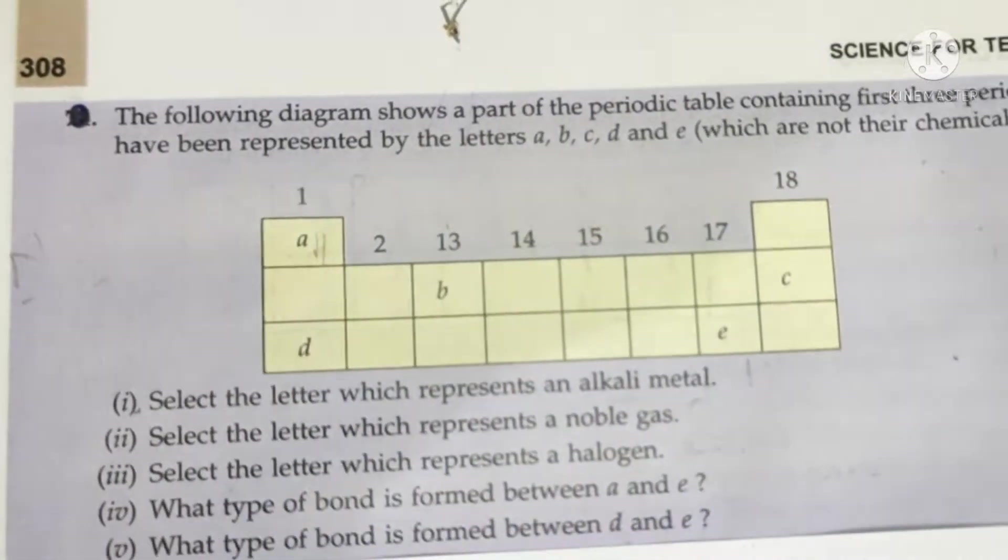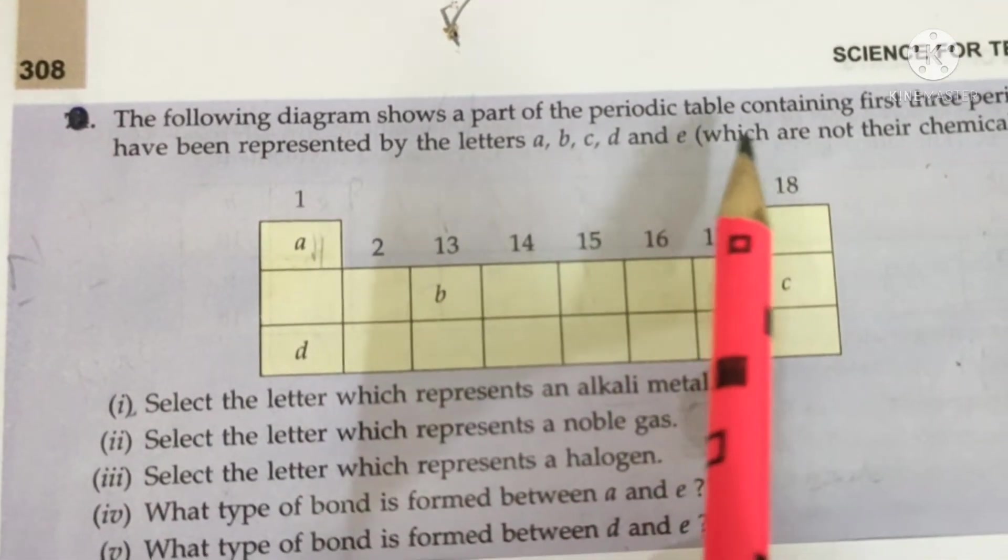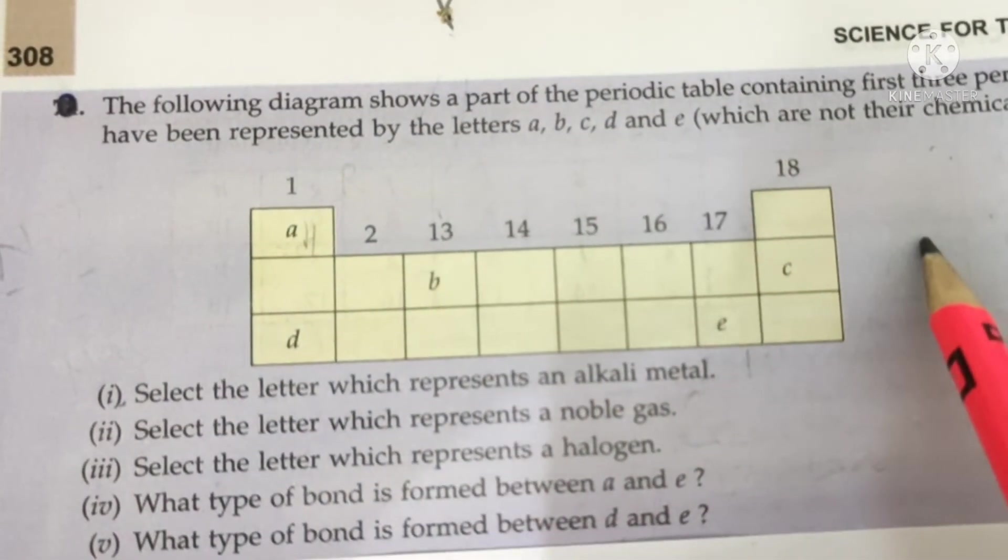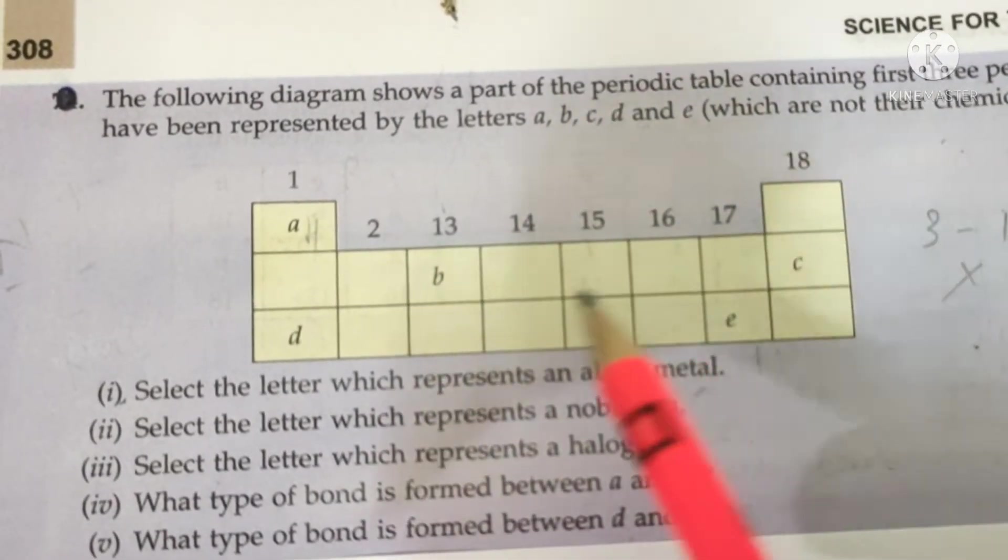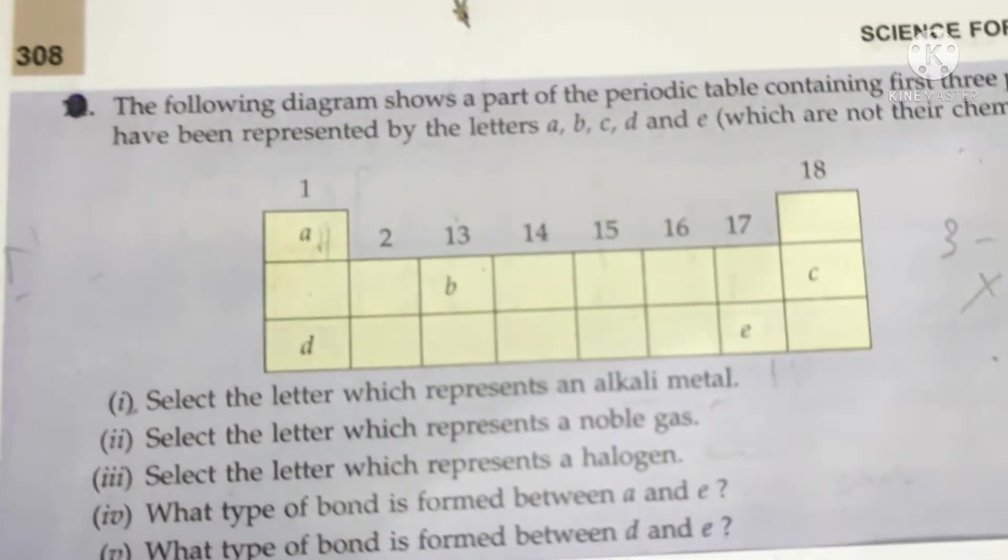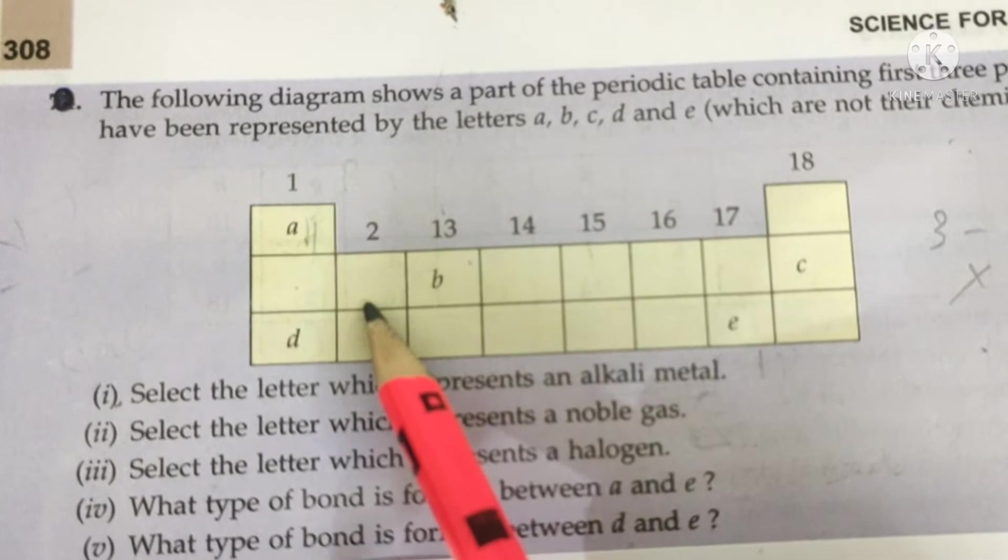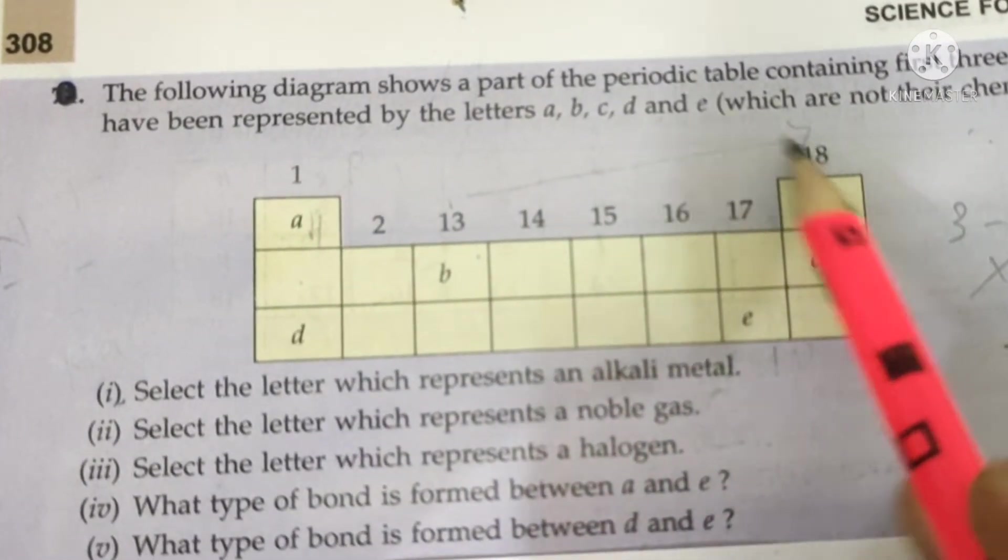So let's read the table first. Can you see the table? The following diagram is a part of periodic table in which group number 3 to 12, which we don't know, is not given. So group number 1 is alkali metals, group number 2 is alkaline earth metals, 13 to 18 are all our non-metals. This is 13, boron family, carbon family, nitrogen family, oxygen family.